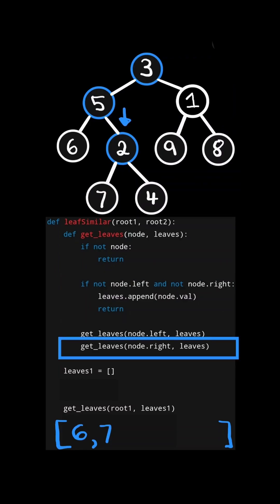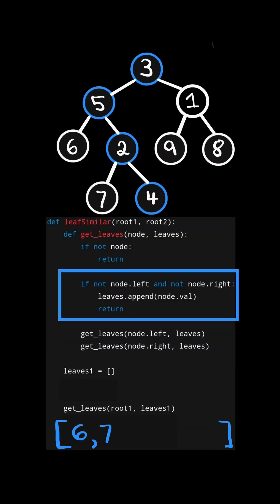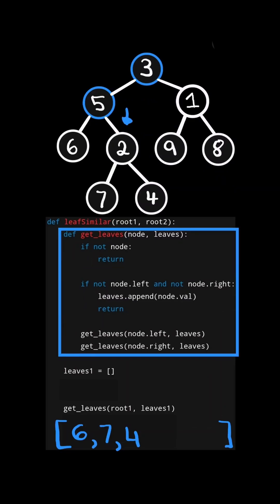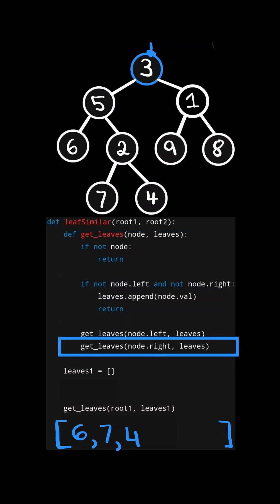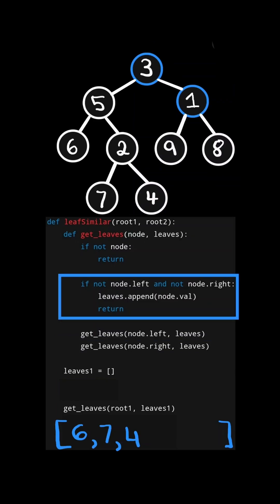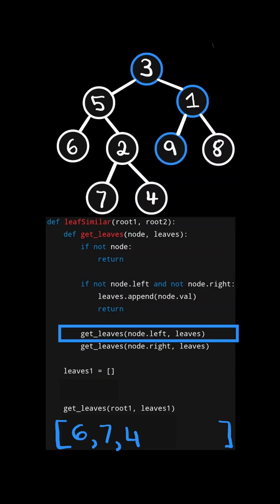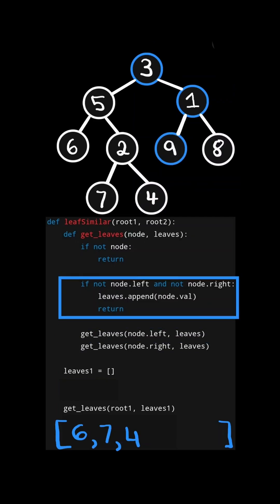We go up the stack to the previous call and recurse on its right node. This node is a leaf node, so we append it to the list and simply return. We go up the stack and this call is finished. We go up the stack again and recurse on its right node. It's not a leaf node, so we first recurse on its left node. It is a leaf node, so we append it to the list and simply return.